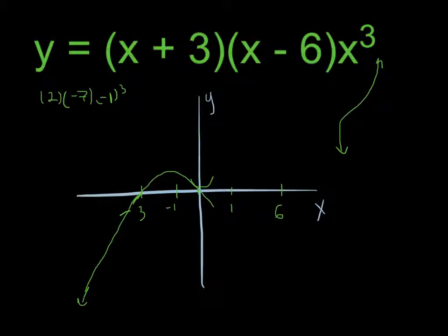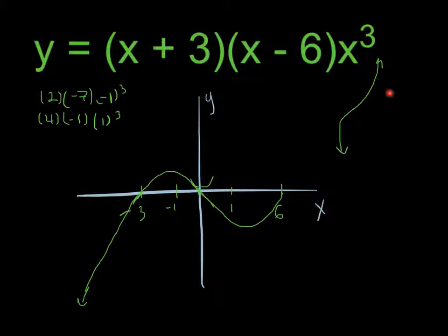Let's choose positive 1. If I plug in positive 1, I'm going to end up with 4 times negative 5 times 1 cubed, which is a positive times a negative times a positive — so it must be negative. We're going to continue passing through, and then come up. We don't have to do a test at x=6 because the end behavior of a quintic function means it must eventually rise, so it passes through x equals 6 and continues rising upward.